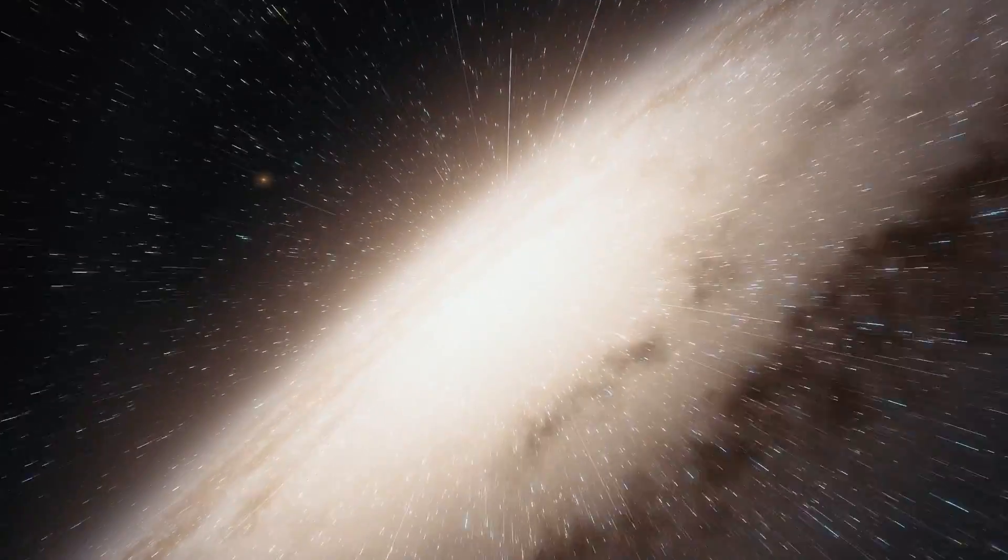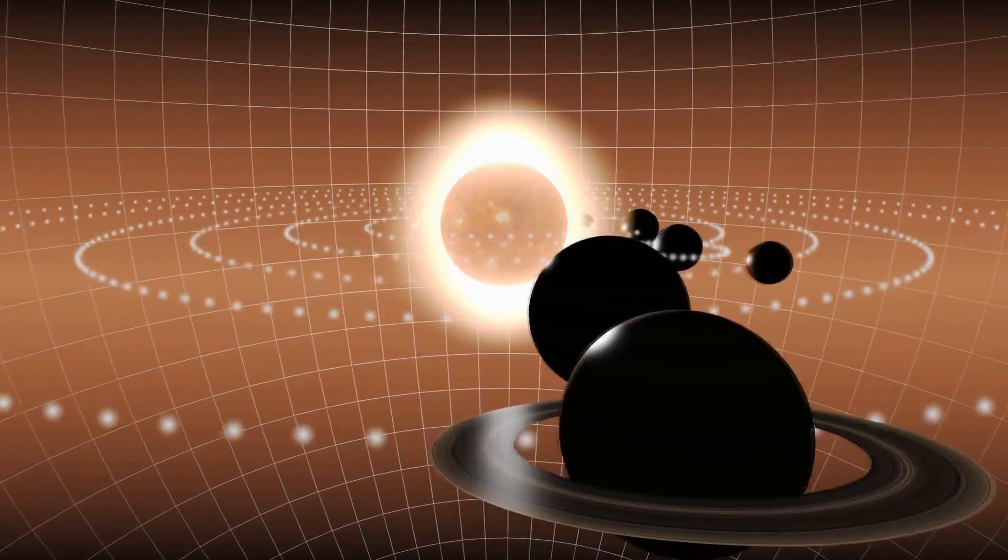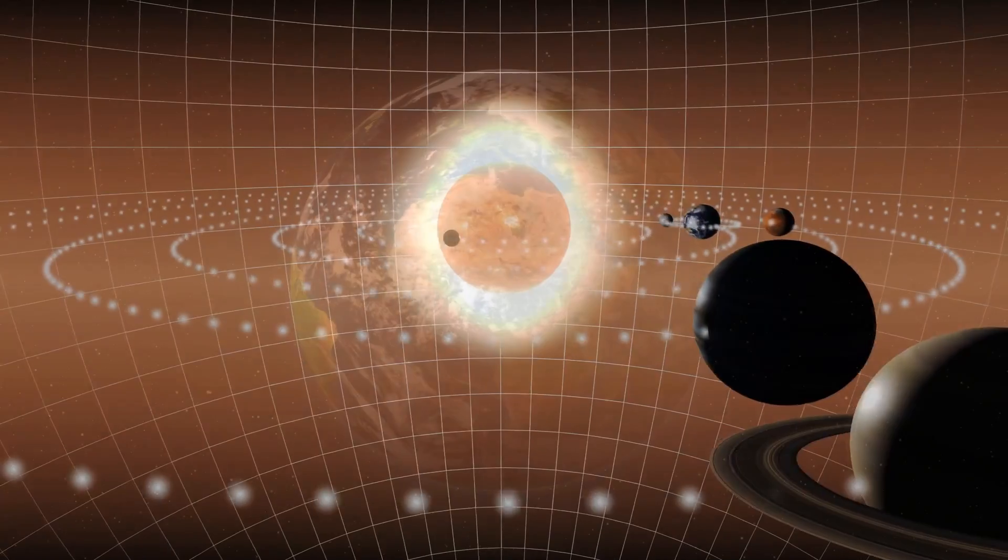As a tiny speck in one spiral arm of our galaxy, we find our solar system of planets, including planet Earth.